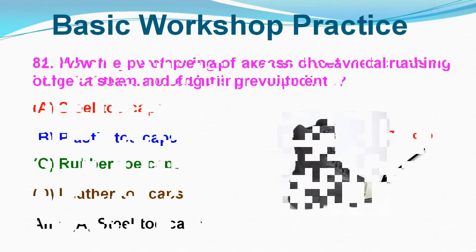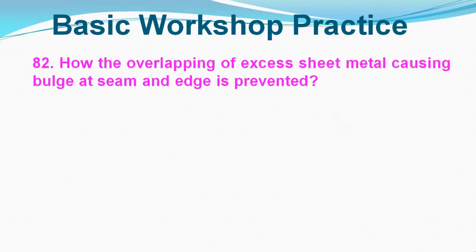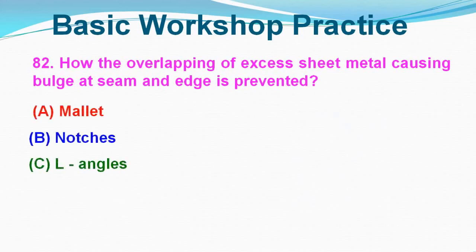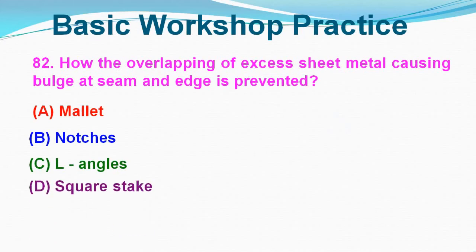Question No. 82: How is the overlapping of excess sheet metal causing bulk at seam and edge prevented? Option A: Mallet, Option B: Notches, Option C: L angles, Option D: Square stacks. Correct answer is Option B, Notches.